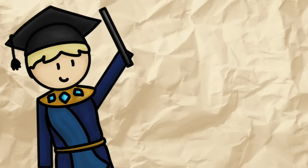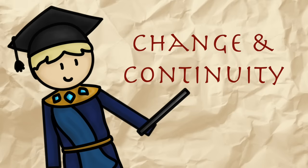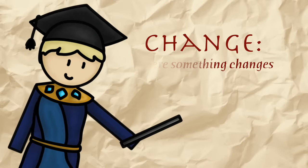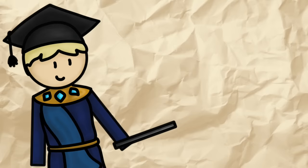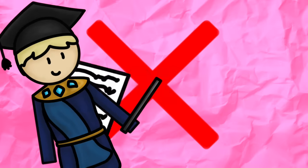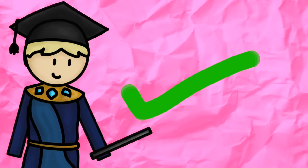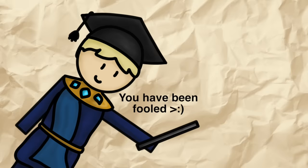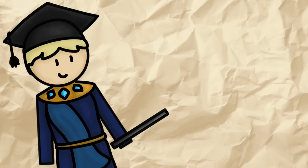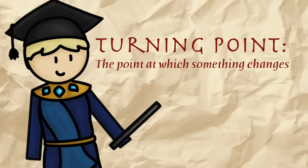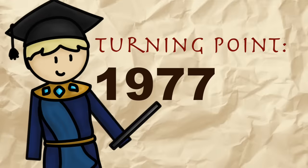Seeing as Crime and Punishment is all about change and continuity, let's talk about change and continuity. Change is where something becomes different. In a historical context, this could be where it's illegal to like the colour pink until suddenly, in 1977, a law is passed making liking pink legal — this would be a change. Just a note: that's completely ahistorical; it was never illegal to like the colour pink. A turning point is the point at which something changes, so in this example 1977 would be a turning point.